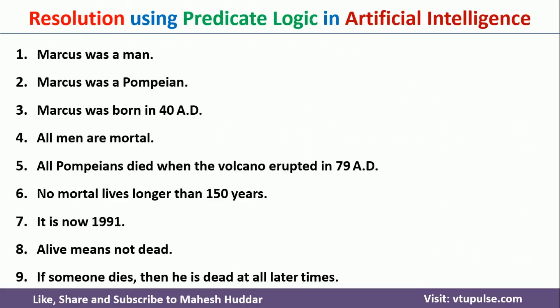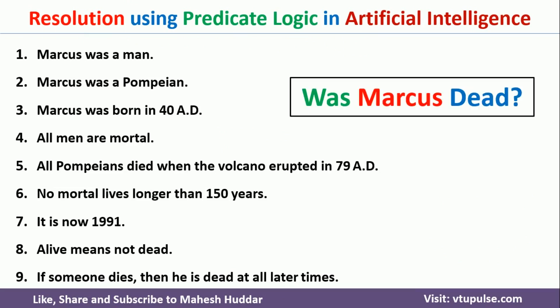These are the 9 facts or statements given to us. Now, we need to prove or check whether Marcus was dead or not using these particular facts or sentences. First, we need to convert these particular facts or sentences into logical statements, and then we need to check whether Marcus was dead or not.